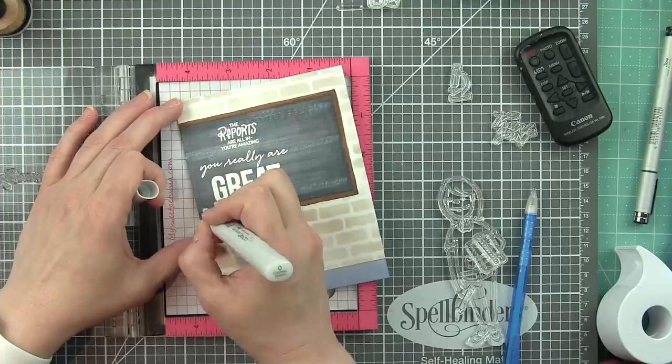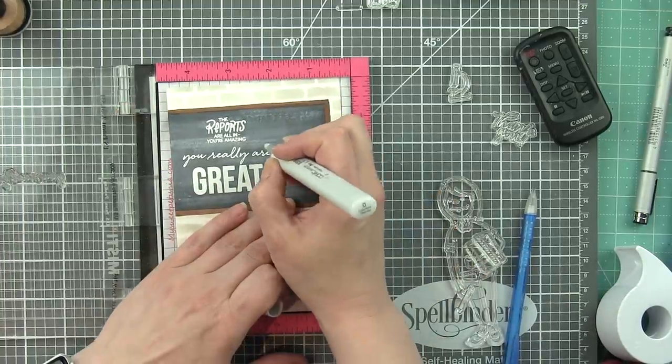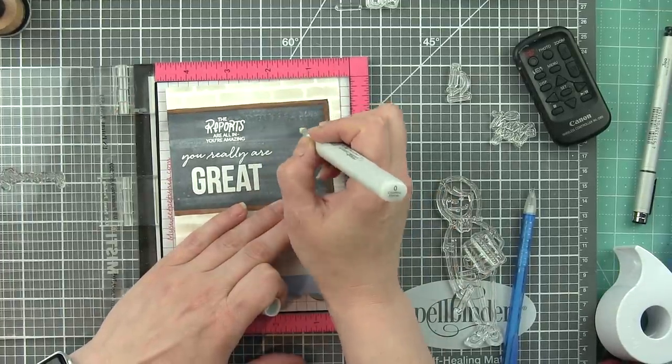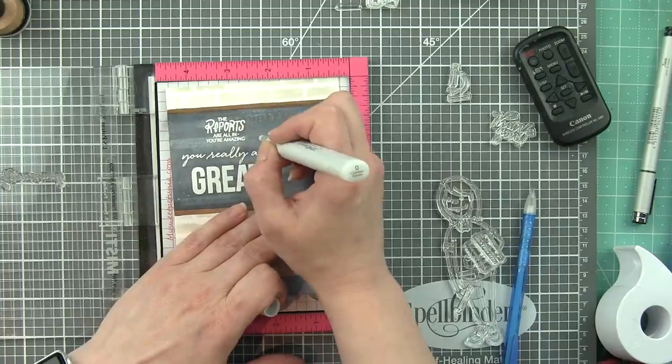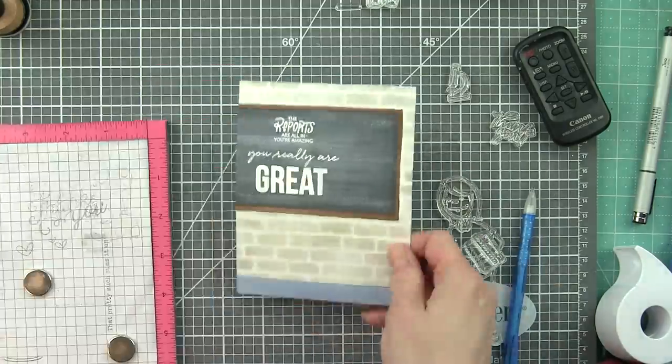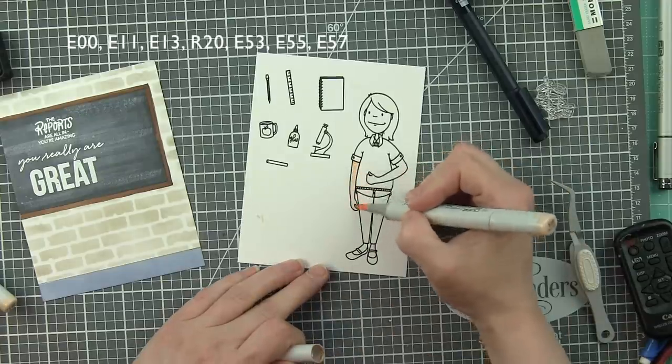Now I even like to go in with my colorless blender and create some little dots here and there. It really just kind of helps create that imperfection in the chalkboard that I really love.